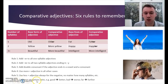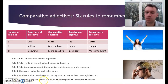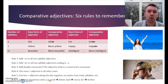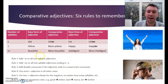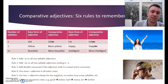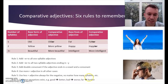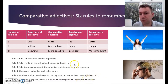Finally, rule six: common exceptions exist which we must be conscious of. For example, 'good' — the comparative form is not 'more good,' it is 'better.' This is better than that. 'Bad' — the comparative form is 'worse.' This movie is worse than the movie we saw yesterday. 'Far' — comparative form: 'further.'